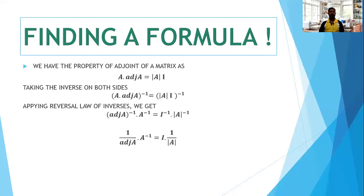So, directly cross-multiplying, you arrive at the formula: A inverse is equal to adjoint A divided by determinant A. That is why we discussed how to find the adjoint of a matrix — to find the inverse of a matrix. Using the adjoint of a matrix, the formula is A inverse equals adjoint A divided by determinant of A.